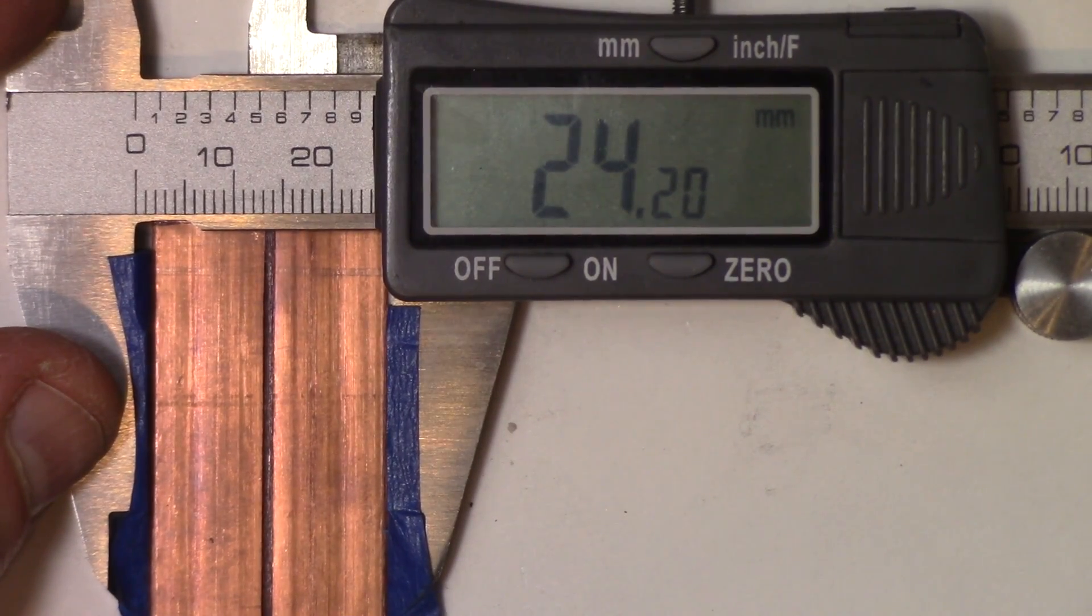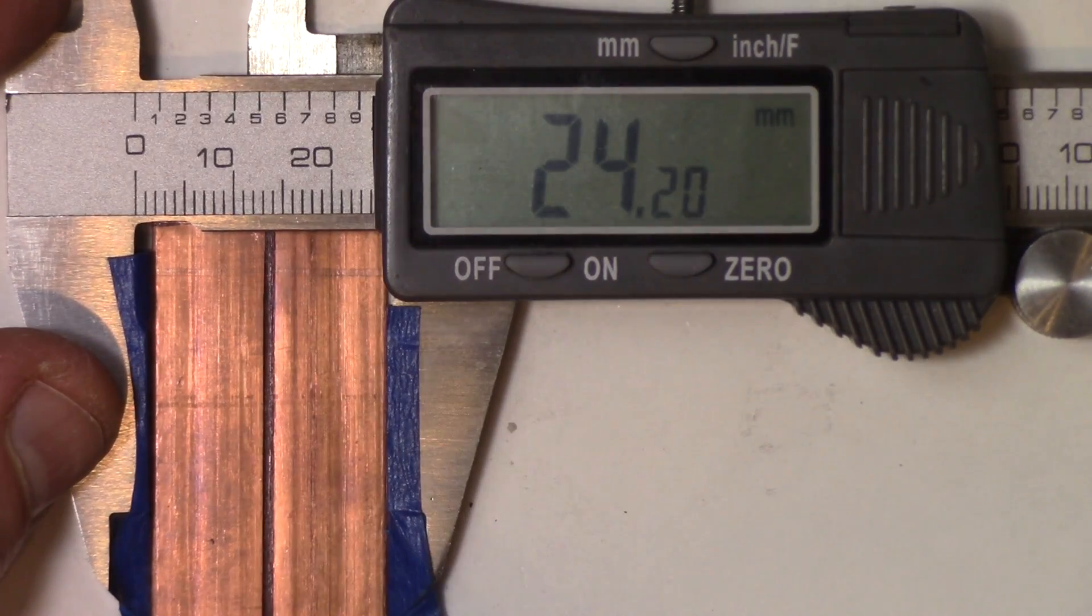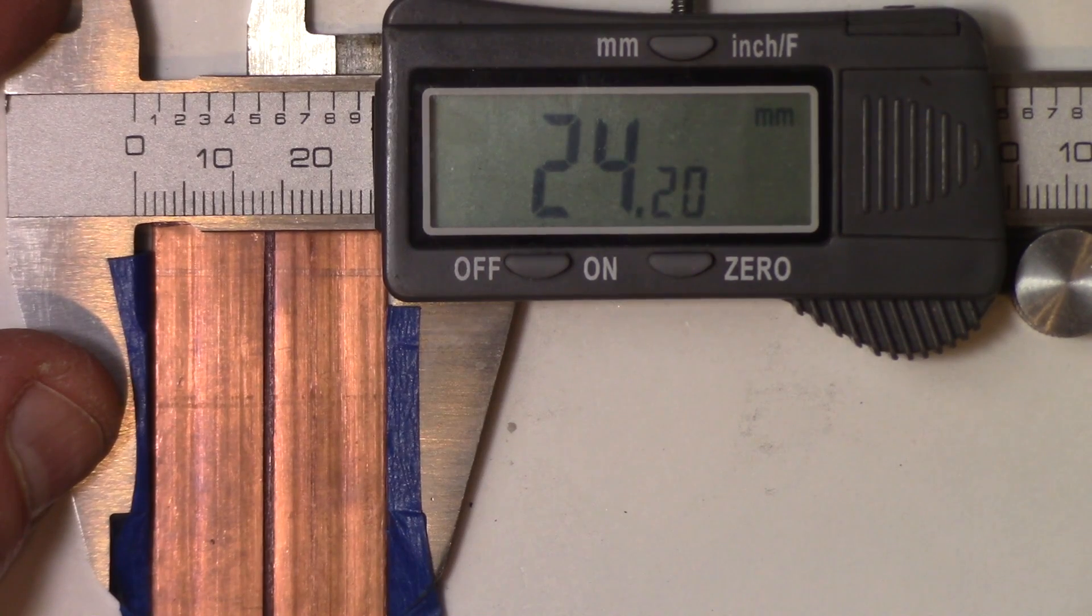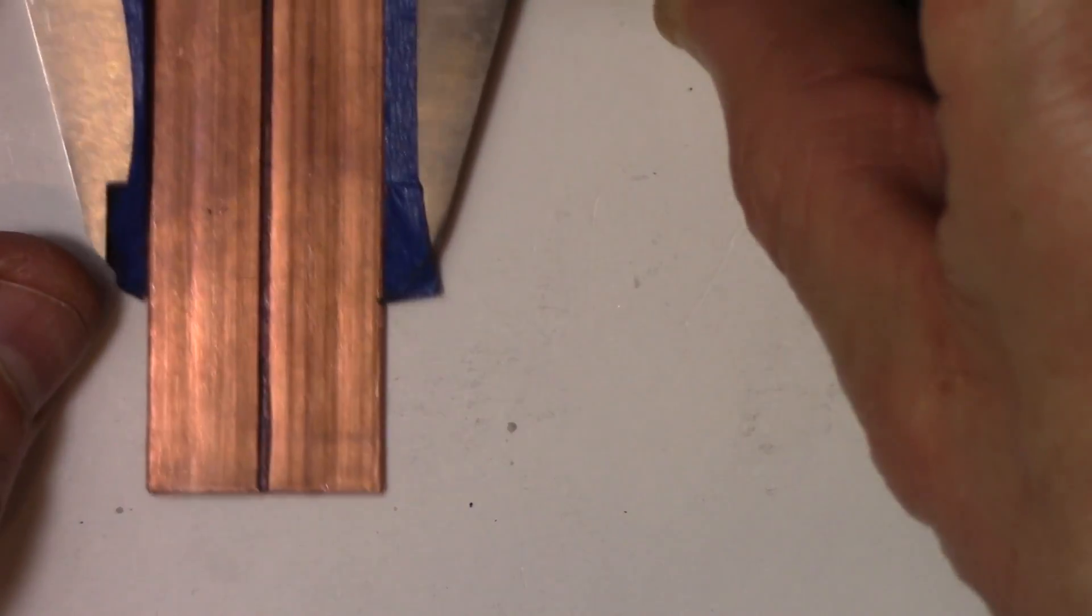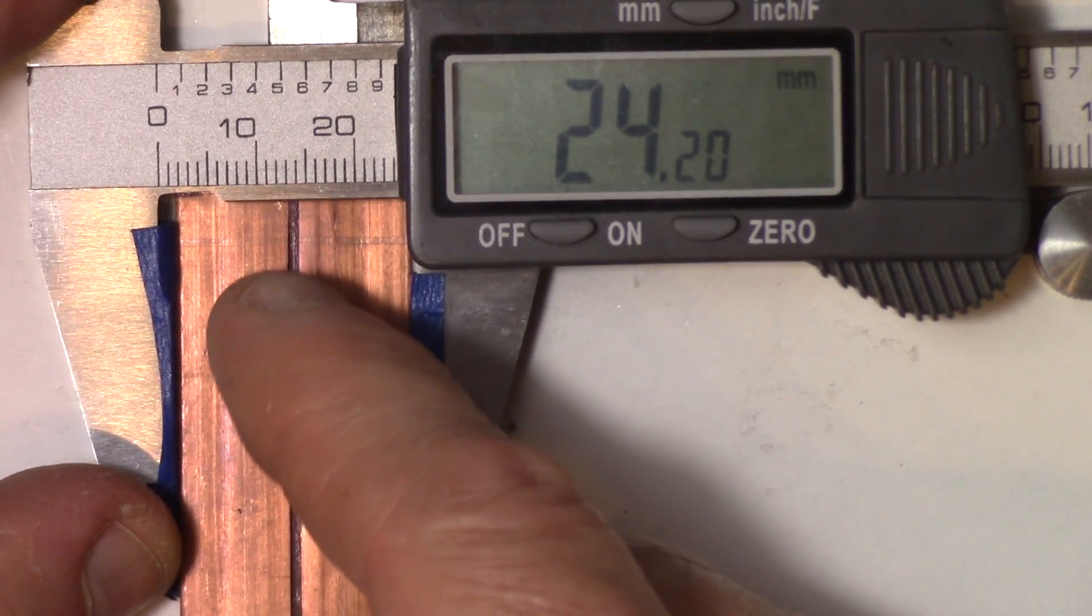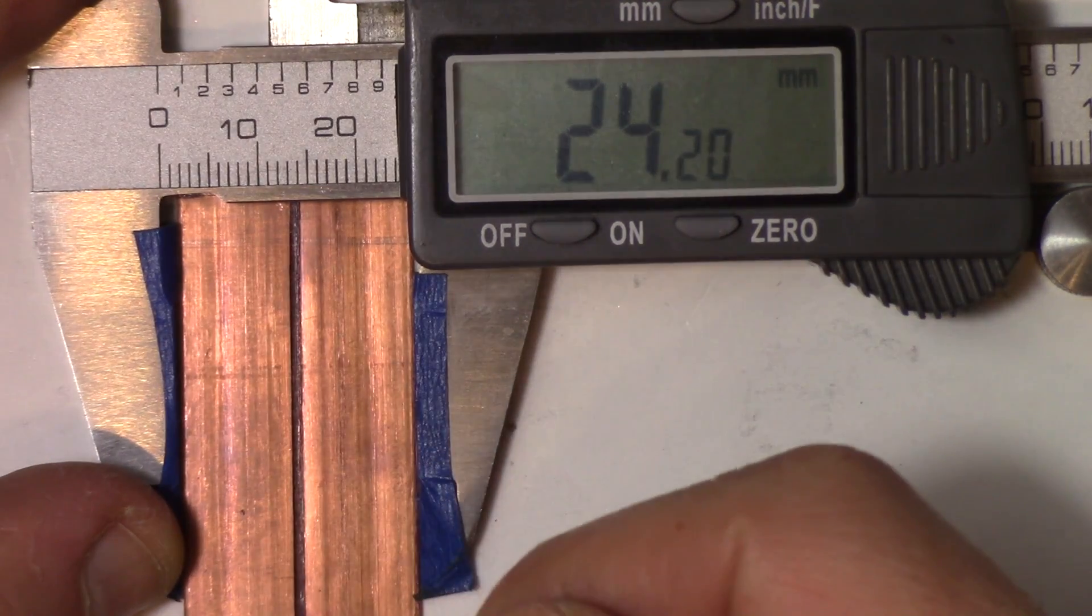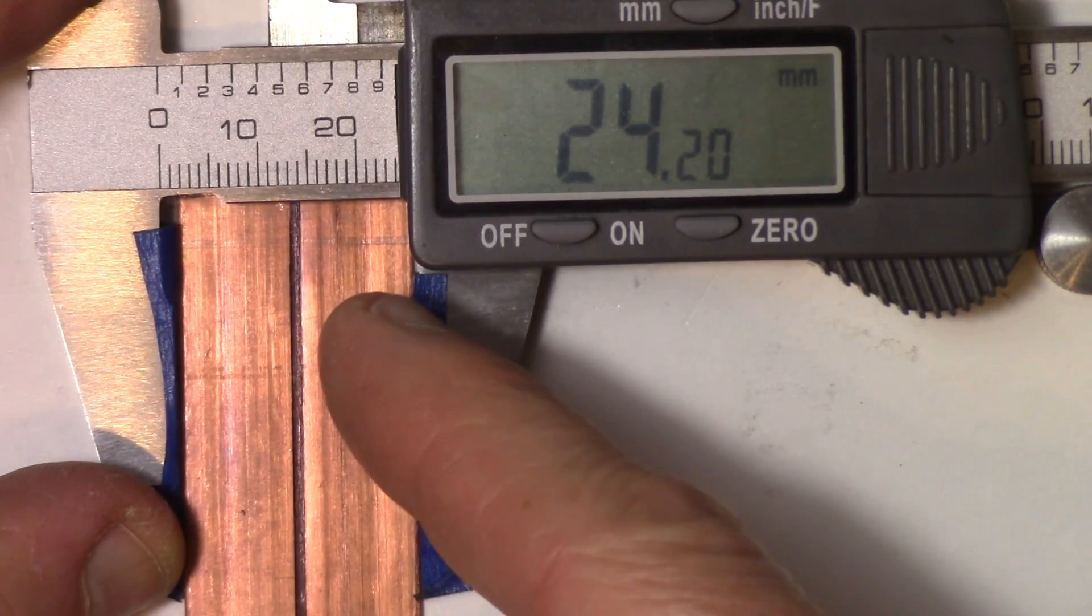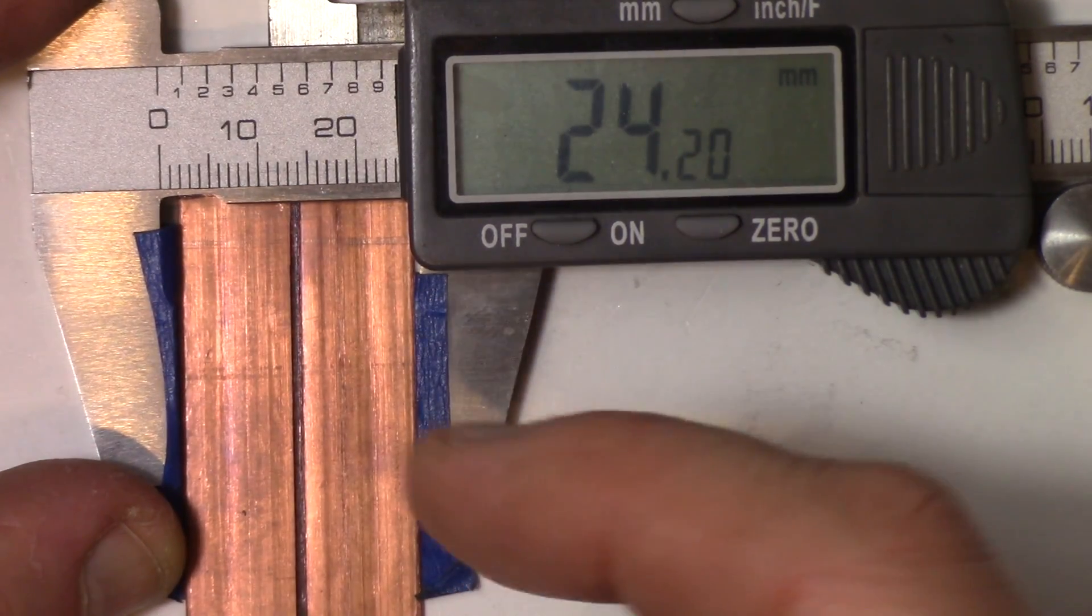The width of the bus bar is 24.20 millimeters. I drew a line in the center here just to get a nice alignment on my holes that we're going to drill through here. And of course, the center would be 12.10 millimeters. So I measured that out, and now I have a nice straight line through the center.